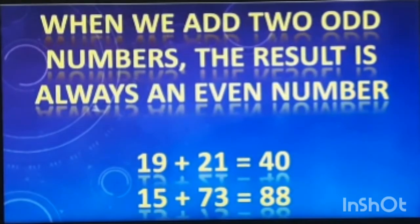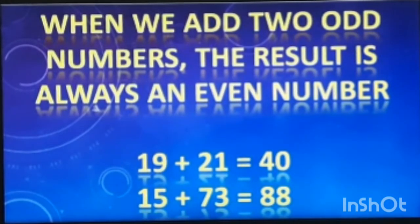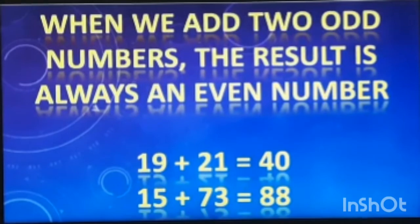15 and 73 are two odd numbers. If we add them, we get 88, which is an even number. Now let's look at the next property of even and odd numbers.